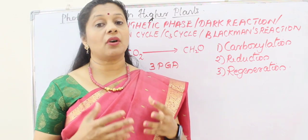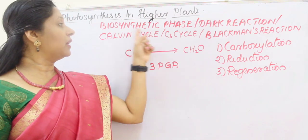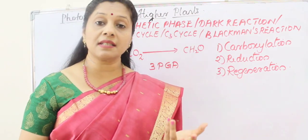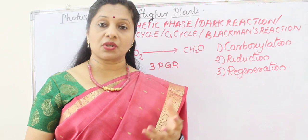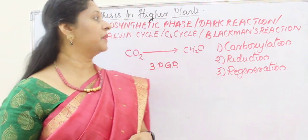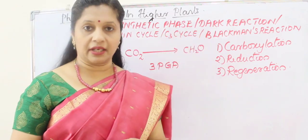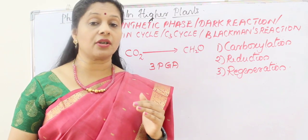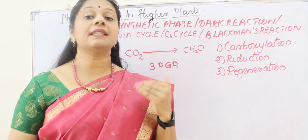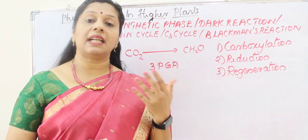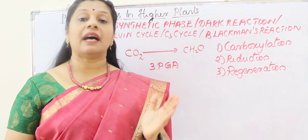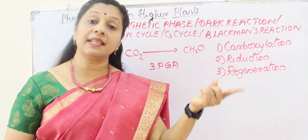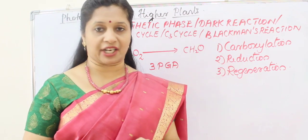The dark reaction has several names. The biosynthetic phase — since carbohydrate synthesis is happening, it is called the biosynthetic phase. It is also called the dark reaction, though that is a misnomer. Dark reaction does not mean it happens in the dark; it is independent of light because whether light is present or absent, the dark reaction can continue, but only utilizing the products formed during the light reaction.